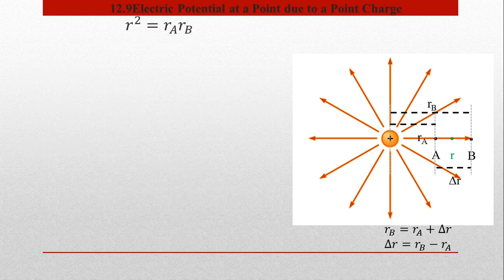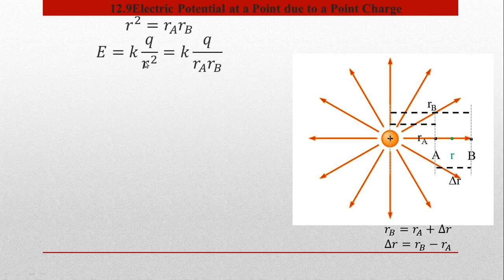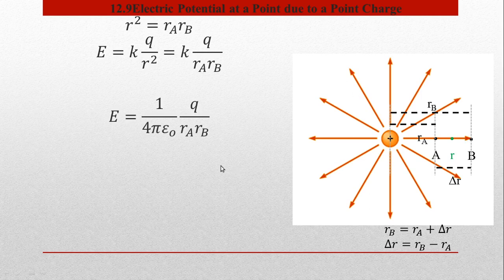Next step میں اس R² کی value کو electric field کے expression میں substitute کر دیں گے۔ Electric field کا expression تھا E = kq/r²، اس کے اندر R_A اور R_B substitute کر دیا گیا ہے۔ اب جو field ہے وہ ان دو points پر depend کر رہا ہے اور اسی region کے field کو ہم consider کر رہے ہیں۔ k کی value substitute کرنے پر overall expression بن جائے گا۔